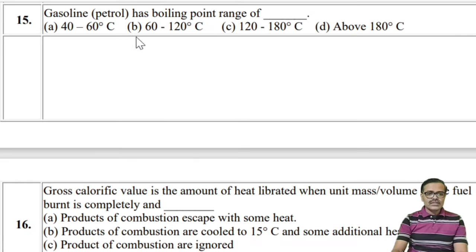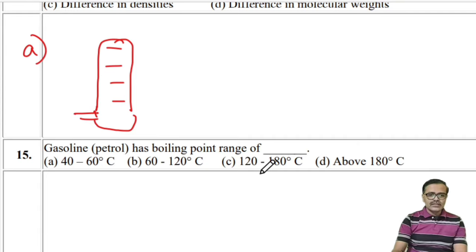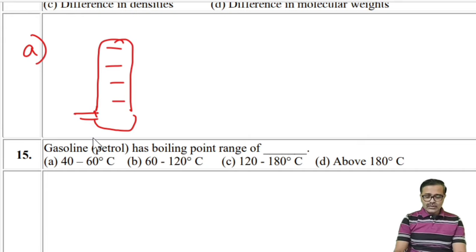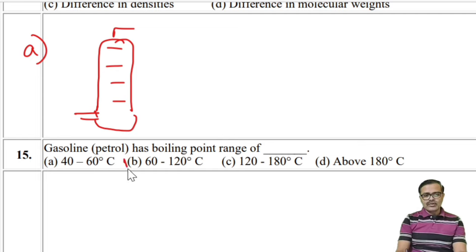Regarding boiling points of petroleum fractions, remember: heavy oil, kerosene, naphtha, etc. You must remember the names of these fractions and their boiling points. Gasoline has a boiling point in the range of 60 to 120°C, so the answer is the second option.